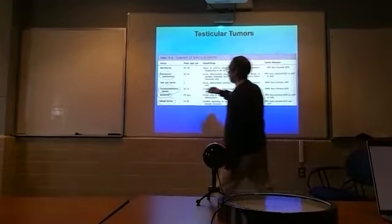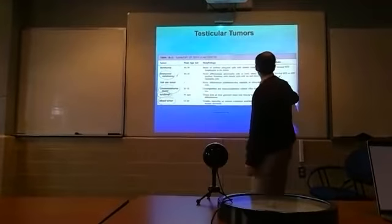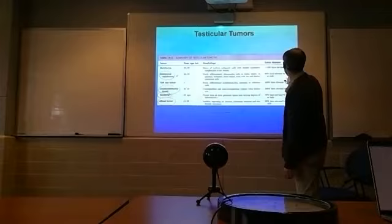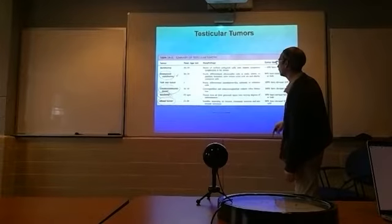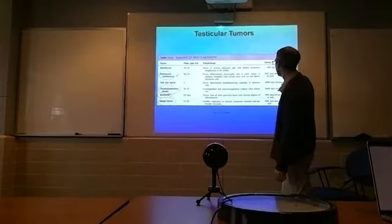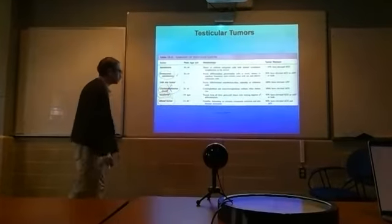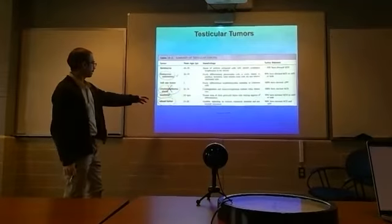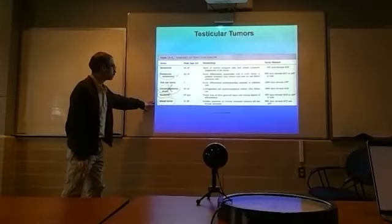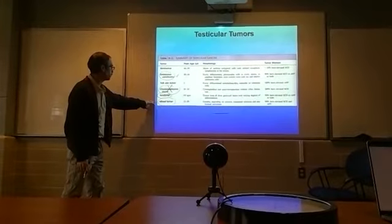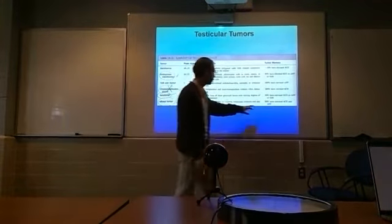It also makes alpha fetoprotein and human chorionic gonadotropin. This one, embryonal cancer, still could be a possibility - 90% HCG or alpha fetoprotein. Choriocarcinoma, that only makes HCG, so choriocarcinoma wouldn't be a good choice. It looks like teratoma and mixed germ cell tumor could also be a possibility since they both elaborate there.